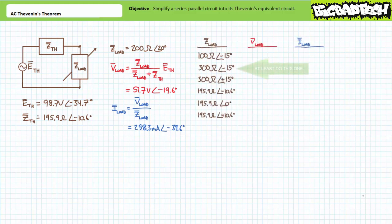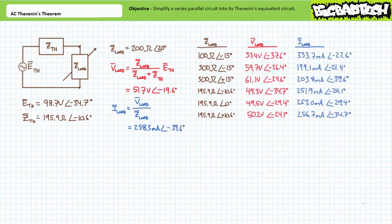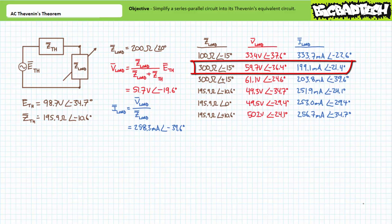Using the Thevenin's equivalent circuit with ZLOAD at 200 ohms at an angle of 20 degrees, the voltage divider rule gives voltage across the load as 51.7 volts at an angle of negative 19.6 degrees, and Ohm's law gives current through ZLOAD as 258.3 milliamperes at an angle of negative 39.6 degrees — the same results as the series-parallel analysis. As an exercise, solve for voltage across and current through the load for a range of load conditions. To keep this lecture short, let's just analyze one scenario: with the load set to 300 ohms at negative 15 degrees, the voltage divider rule gives 59.7 volts at negative 36.4 degrees, and Ohm's law gives 199.1 milliamperes at negative 21.4 degrees.